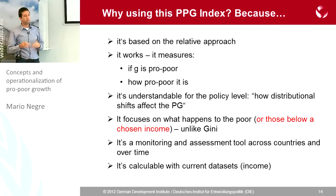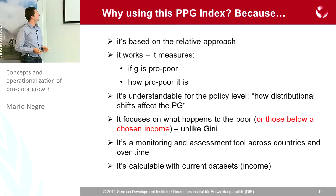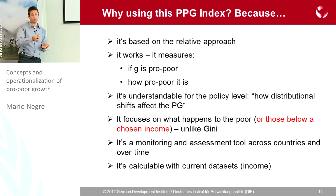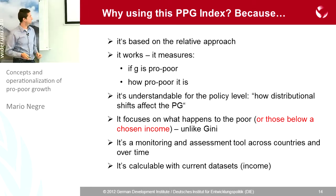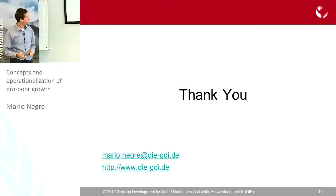Why am I claiming this index is useful? It's easy to interpret — distributional changes in the poverty gap, any politician can understand that. It does measure growth and how pro-poor it is, and it's really related to a disproportional benefit for the poor. At least for this definition, this seems to work. What I'm doing now is calculating this for the whole world income series, and hopefully in a few weeks or months I'll have this for all world countries and spells if possible.